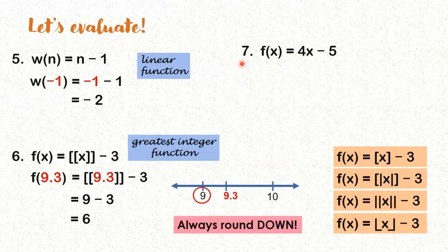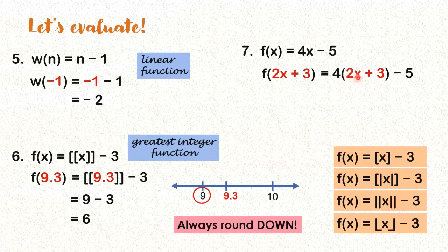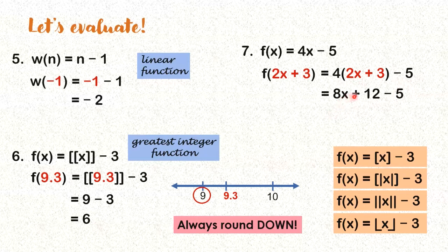What about number 7? Obviously, this one is a linear function. Let's evaluate f of 2x plus 3. Yung x dito, pinalitan ng 2x plus 3 — we substitute. So what is 4 times 2x? We get 8x. What is 4 times 3? We get 12. And then minus 5. We simplify: 8x plus — what is 12 minus 5? 7. So this is our final answer: f of 2x plus 3 equals 8x plus 7.